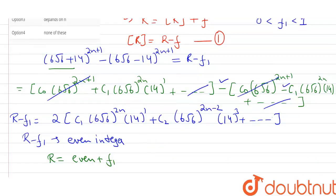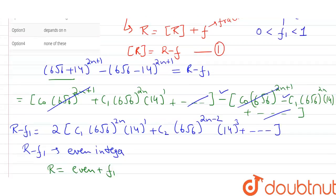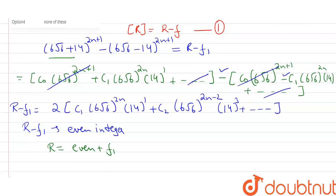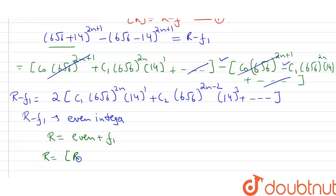Now from here, R = [R] + f. And our f is also belonging from 0 to 1. From this we can say that f₁ and f are equal.